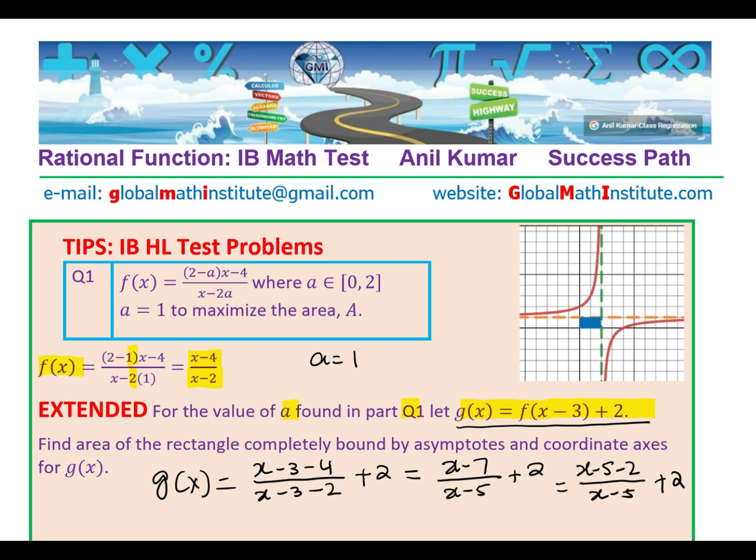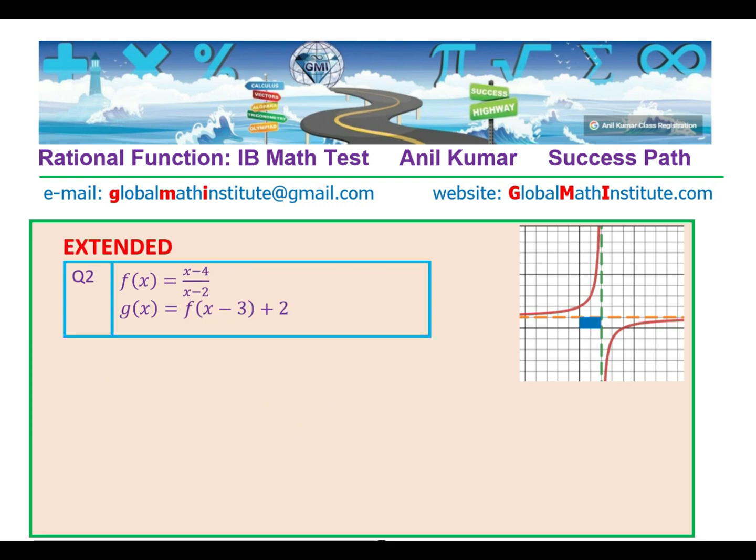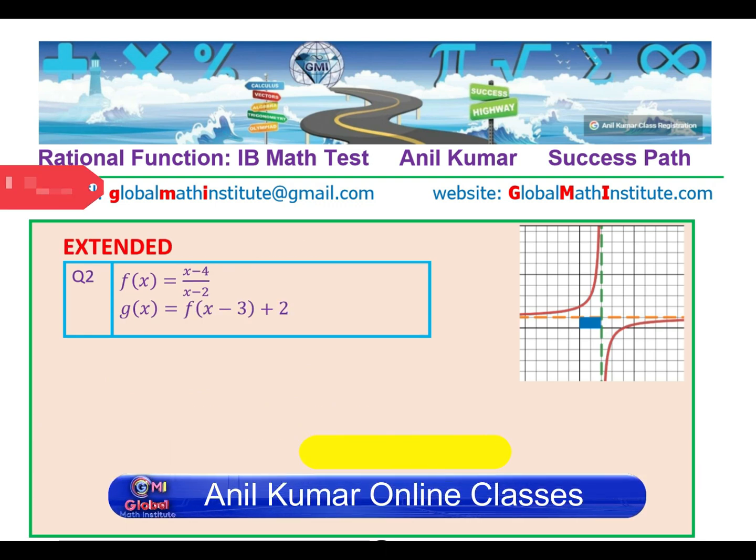So you can actually continue from here and do the needful. We'll move on to the next page where we'll say that (x-5)/(x-5) is 1. And therefore, the horizontal asymptote is 3. And the other factor is -2/(x-5).